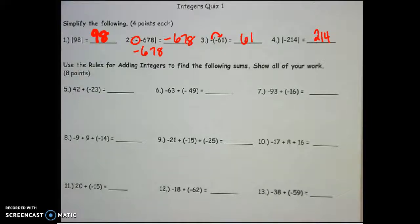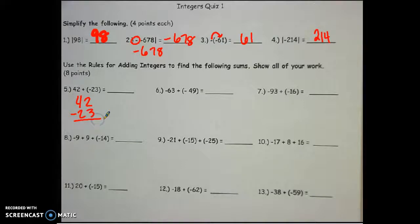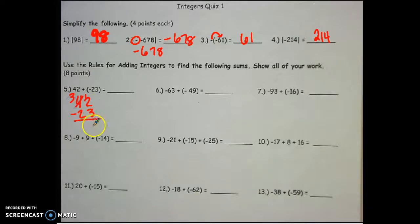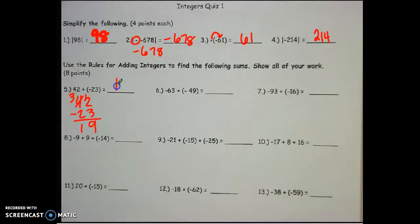For number 5, I have different signs, so I subtract. Your biggest number — whichever one has the biggest absolute value — goes on top, then you subtract like normal. We regroup: 12 minus 9, 12 minus 3 is 9, 3 minus 2 is 1. The number with the highest absolute value is positive, so the answer is positive 19.